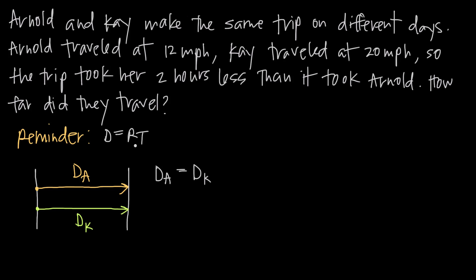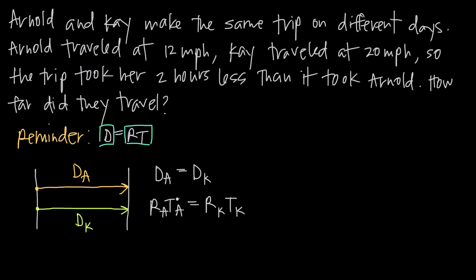We know that distance is equal to rate times time. Looking at this formula, we want to realize that we can make a substitution — we know that D equals RT, so we can use these interchangeably. Instead of saying distance, we can say rate times time. So Arnold's rate R sub A times Arnold's time T sub A is going to be equal to Kay's rate times Kay's time. We just substituted rate times time for distance, so since their distances are equal, the products of their rates and times are also going to be equal.